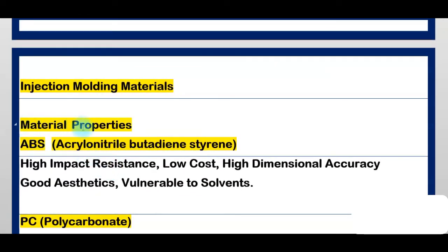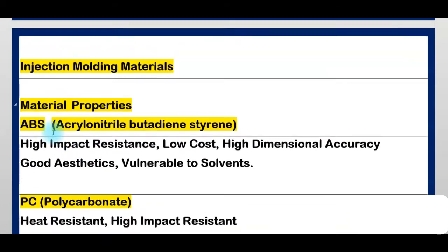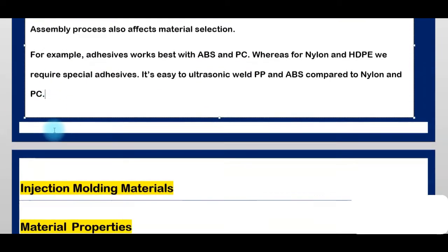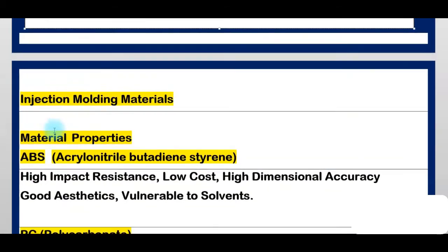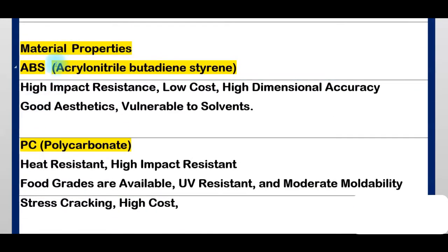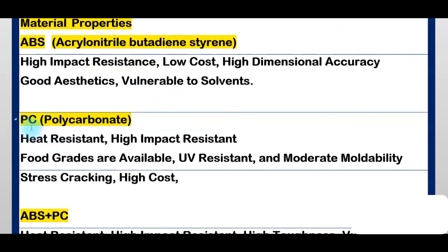Injection molding material properties. First material is ABS — Acrylonitrile Butadiene Styrene. Properties: high impact resistance, low cost, high dimensional accuracy, good aesthetics, but vulnerable to solvents.